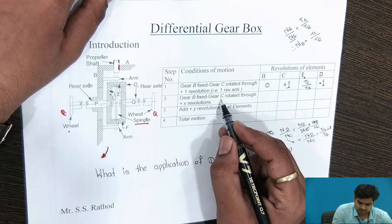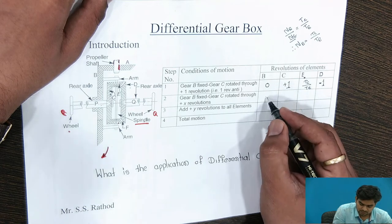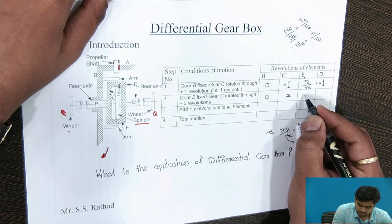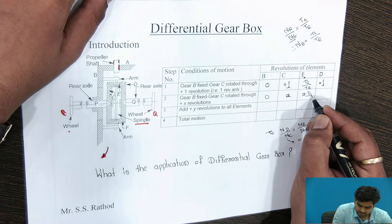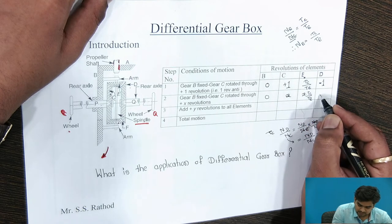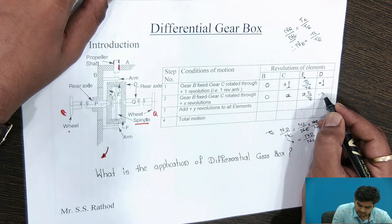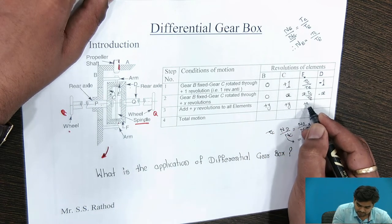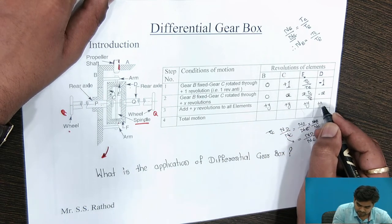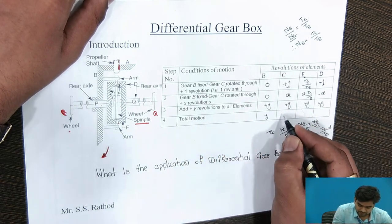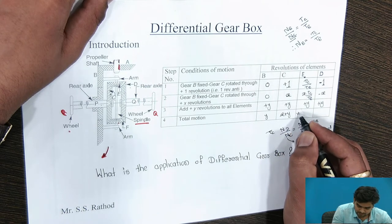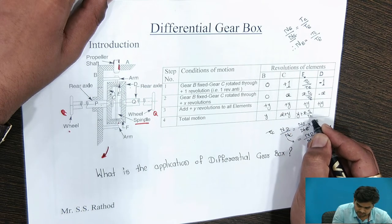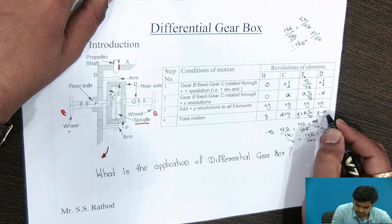Gear B is fixed and gear C rotates through plus X revolutions. As gear C makes X revolutions, multiply through by X: gear E gets X × (TC / TE) and gear D gets minus X. Then add Y revolutions to each element. Total motion: gear B gets Y, gear C gets X + Y, gear E gets Y + X × (TC / TE), and gear D gets Y − X. This is the table of motion.